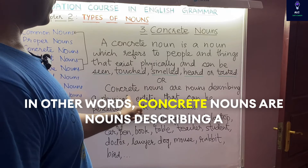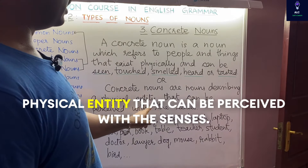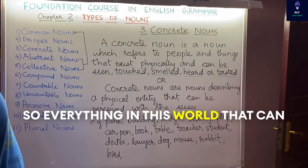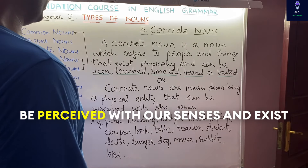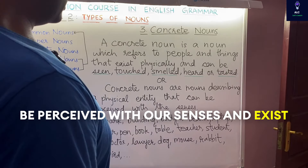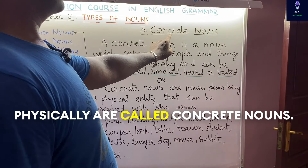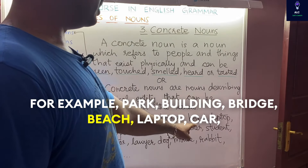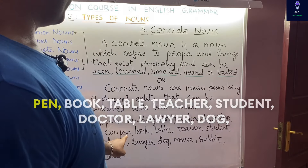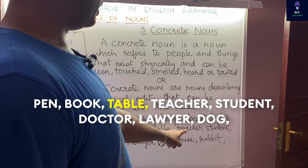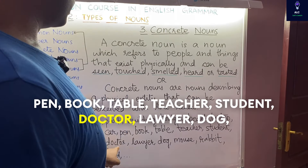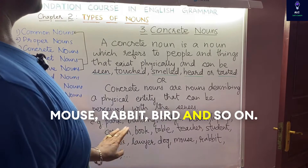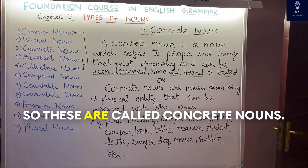In other words, concrete nouns are nouns describing a physical entity that can be perceived with the senses. For example: park, building, bridge, beach, laptop, car, pen, book, table, teacher, student, doctor, lawyer, dog, mouse, rabbit, bird, and so on. These are all concrete nouns.